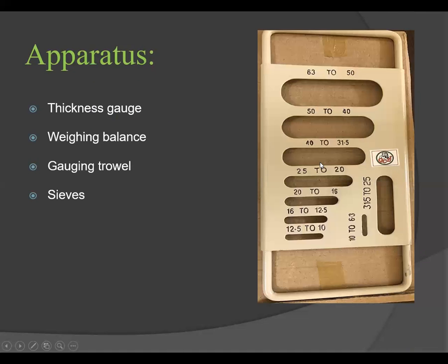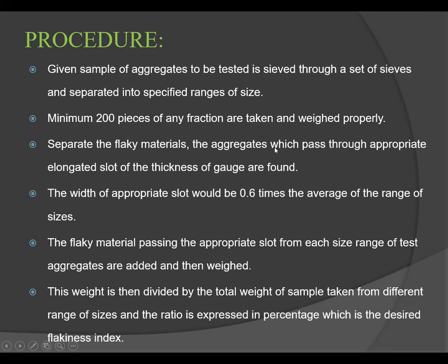Now let's see the procedure for finding the Flakiness Index. First, take the sample of aggregate to be tested and sieve it through a set of sizes, separating into the specified size ranges. Record this sample weight as W1. Then, a minimum of 200 pieces of any fraction are taken. Next, separate the flaky material — the aggregate which passes through the appropriate elongated slot of the thickness gauge.